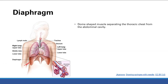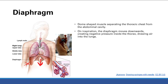Next, the diaphragm — the dome-shaped muscle separating the thoracic chest from the abdominal cavity. When you inspire, the diaphragm moves downward, creating negative pressure inside the thorax that draws air into the lung. Think of it like a syringe: pull the plunger down, you create negative pressure, and things move from higher to lower pressure — that's how air is drawn in through the mouth into the lungs.